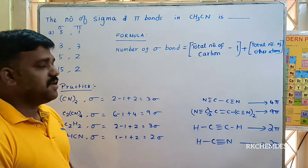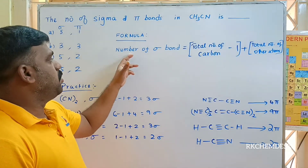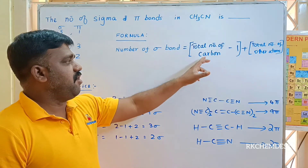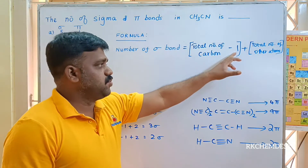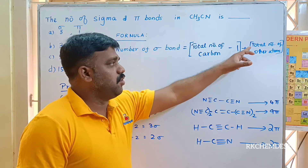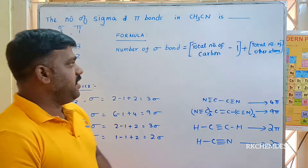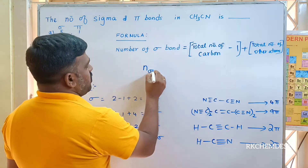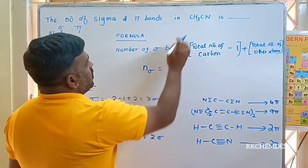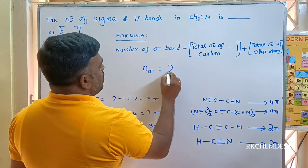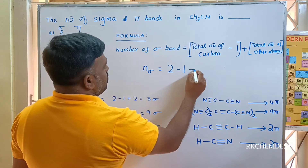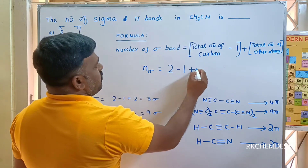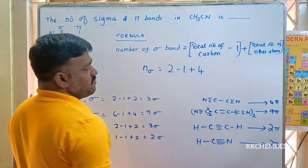So remember the formula: the total number of sigma bonds is equal to the total number of carbon atoms minus one, plus the total number of other atoms. Applying the formula: number of sigma bonds equals two carbons minus one, plus other atoms — three hydrogen and one nitrogen — so four other atoms total.